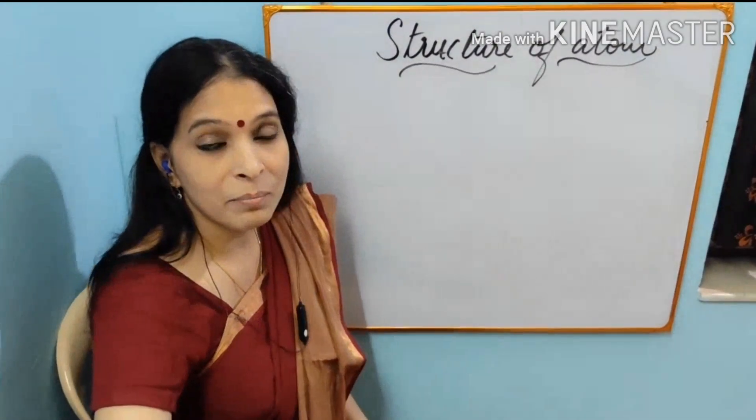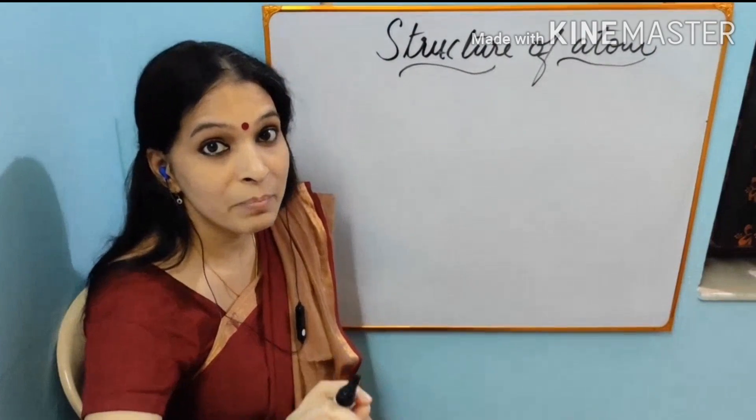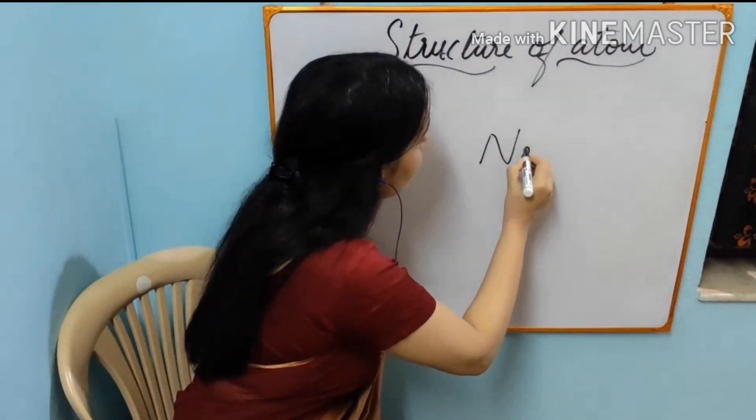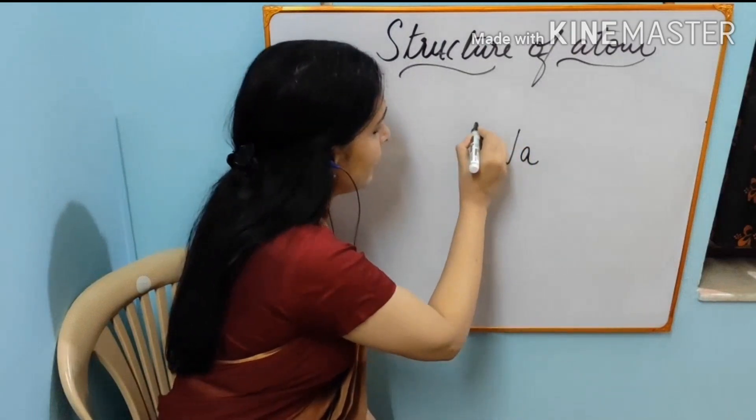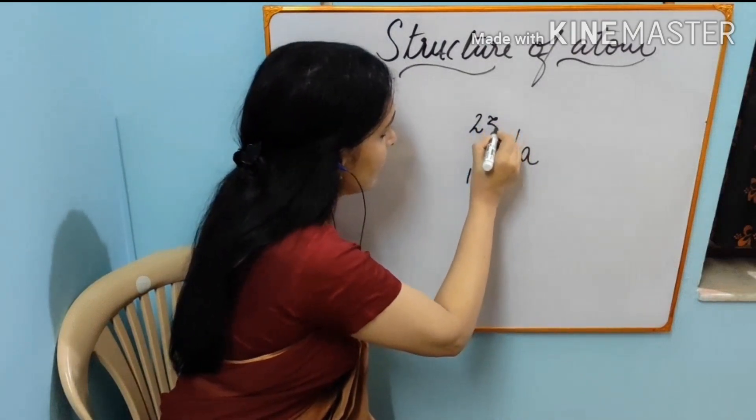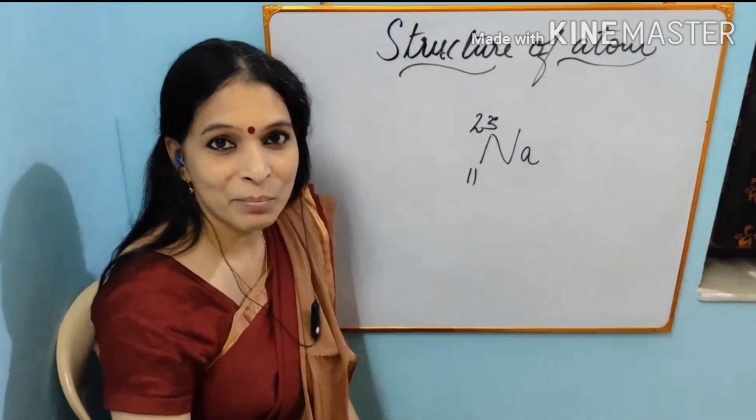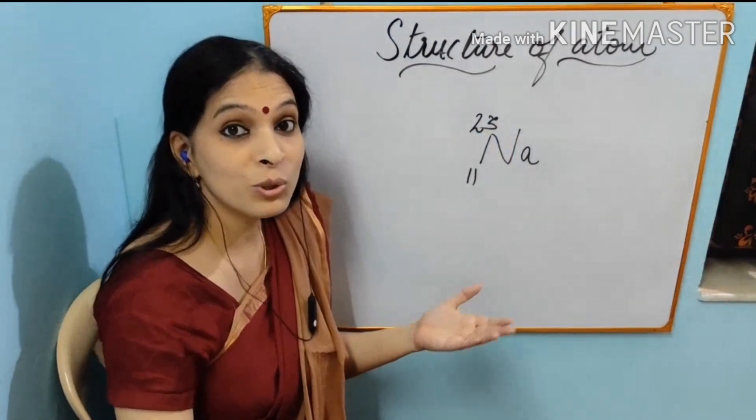I will take the example sodium. Sodium is simple. I will write sodium, atomic number 11 and mass number 23. I will take always sodium as an example.